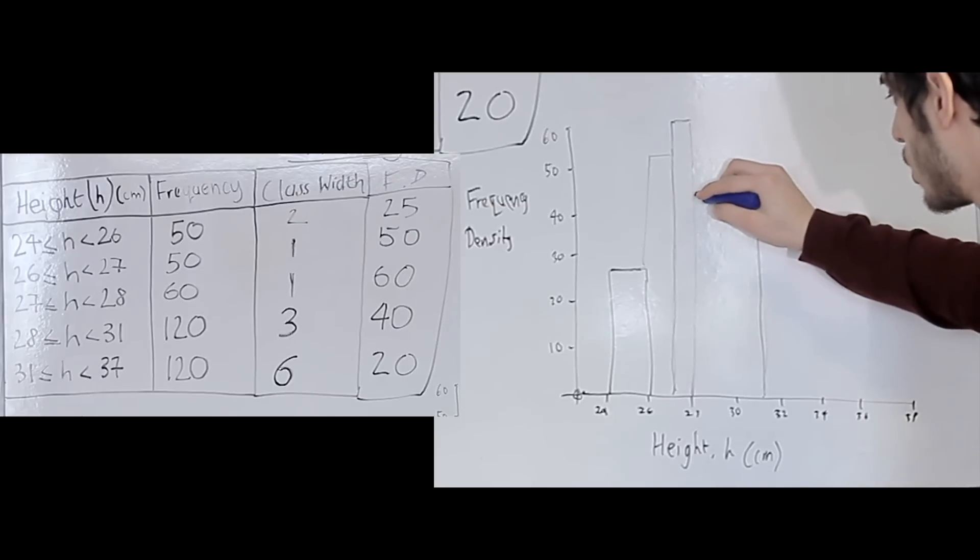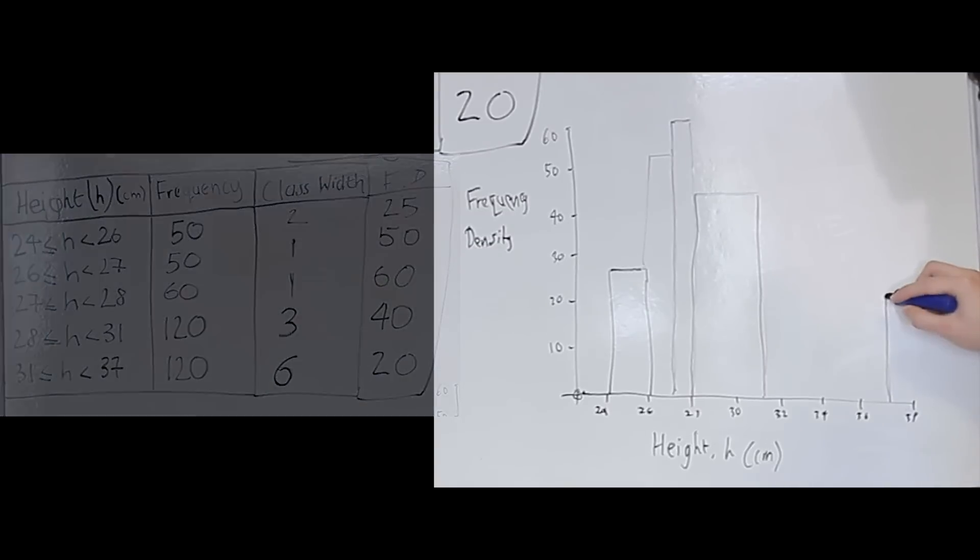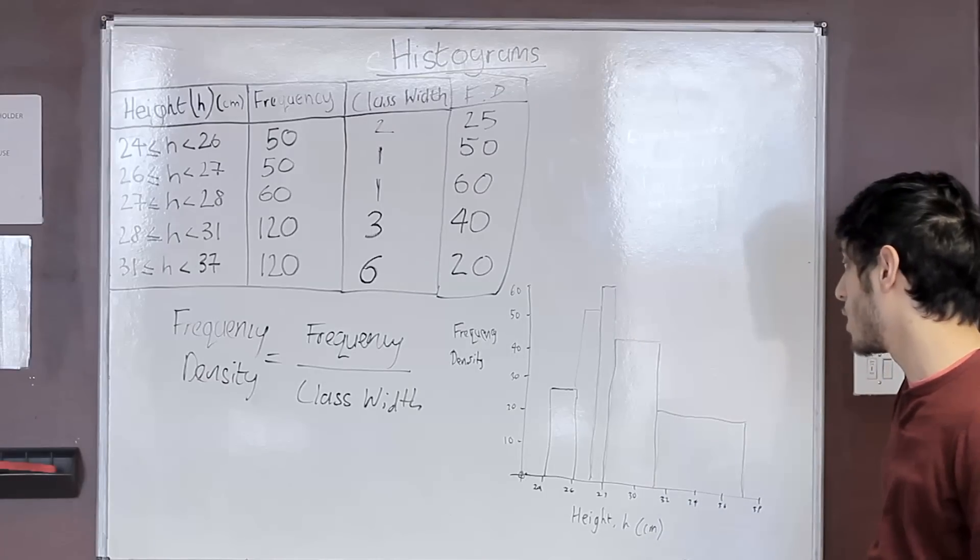So let's see just around here. And our last point is 31 to 37 and our frequency density is 20, so 31 to 37 just roughly here, and that's it, that's our histogram graph.